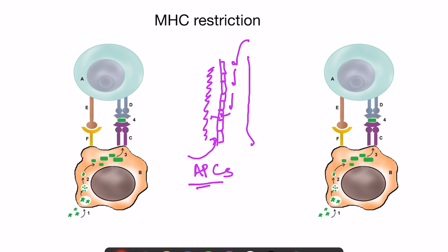Dendritic cells are very important for the first presentation. T cells cannot identify an intact floating antigen, so antigen-presenting cells phagocytose the antigen, break it down into small particles, and present it in association with MHC (major histocompatibility complex) protein to the T cell receptor. T cells only identify cell-associated antigen, not soluble intact proteins — for those, antibodies are used.